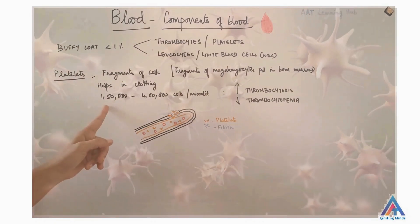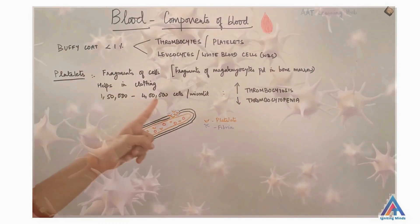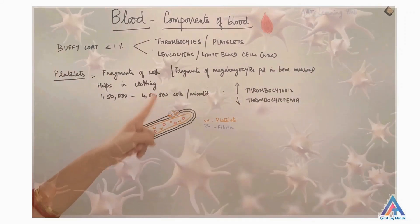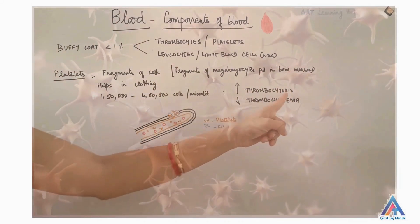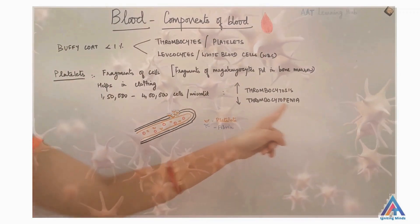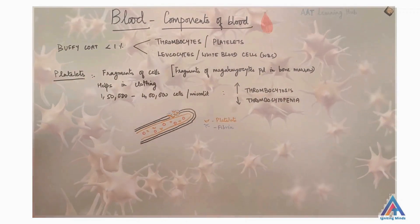Platelet count in one microliter of blood ranges between 1 lakh 50 to 4 lakh cells. If this count increases, it's called thrombocytosis, and if it decreases, it's called thrombocytopenia.